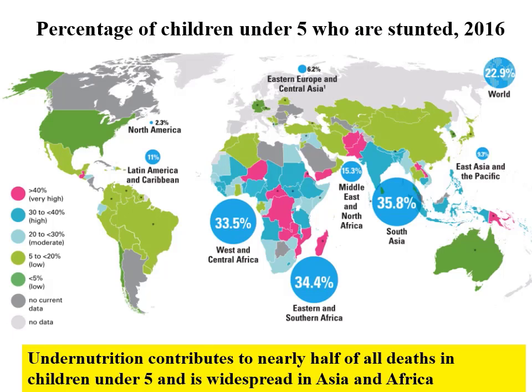At the other end of the scale — and it's not a funny matter — the percentage of children under five who are stunted: 33% in Western Central Africa, 34% in Eastern and Southern Africa, 35% in South Asia. Under-nutrition contributes to nearly half of all deaths in children under five.